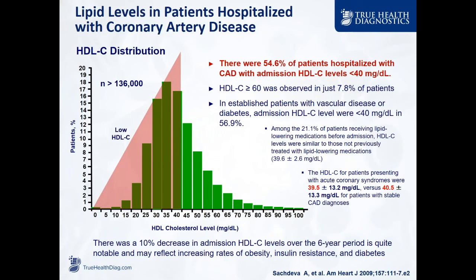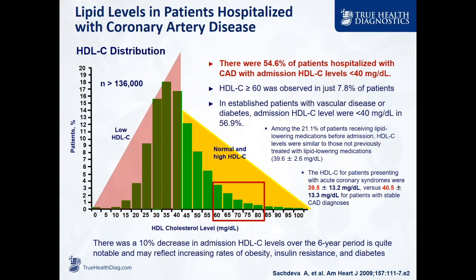In that giant study of 136,000 folks admitted with atherosclerosis, 55% did have a low HDL cholesterol — less than 40 — but what does that tell you? 45%, almost half, had a normal HDL cholesterol level. I can't use a biomarker that has 50% sort of accuracy when there are better ones available. It looks to me like HDL-C is no better than LDL cholesterol — I'll identify some and I'll miss an awful lot.